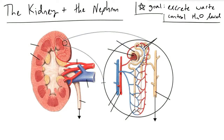In this video I will be discussing the kidney and its basic functional unit, which is called the nephron. I'm going to be describing the path that blood and filtrate will take as it travels through the nephron and makes its way to the bladder before it's finally excreted from your body.